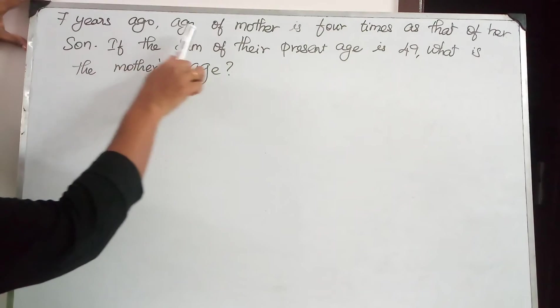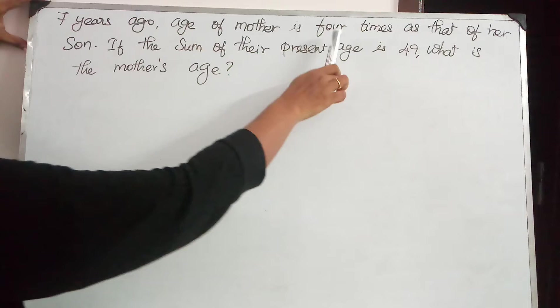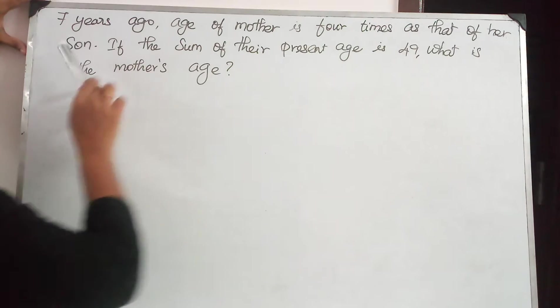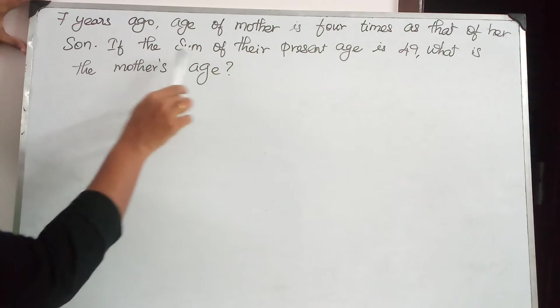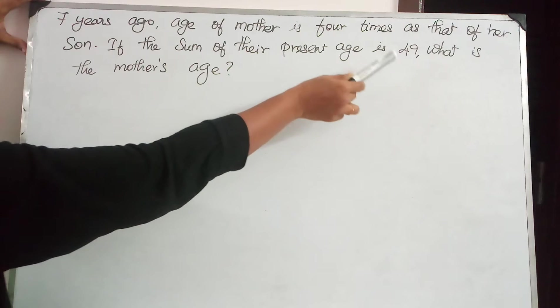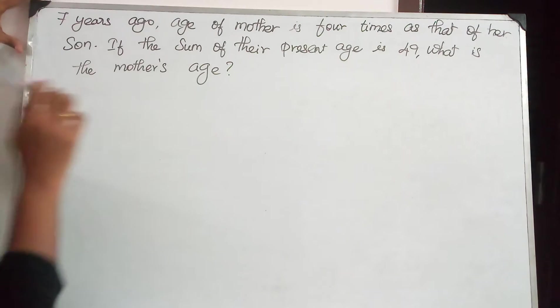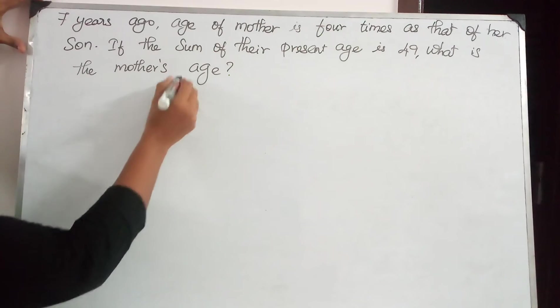7 years ago, age of mother is 4 times as that of her son. If the sum of their present age is 49, what is the mother's present age?